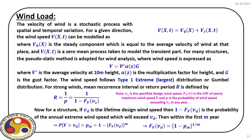A more robust methodology would be to characterize V_t(x,t), the zero-mean transient component, as a random process using random vibration theory for a full dynamic analysis. However, the static approach is very often recommended in codal provisions, which is why V* is defined at 10 meter height in the code. With that, our discussion on different load models ends.